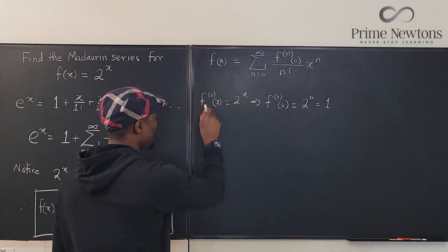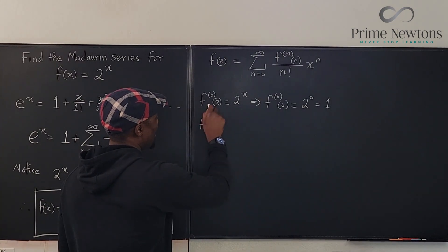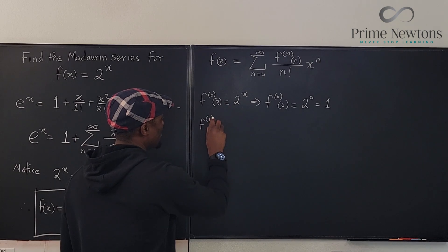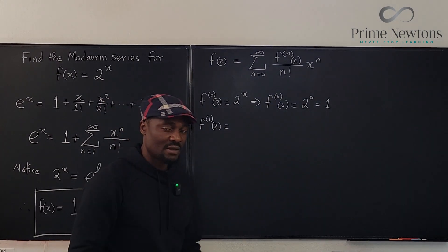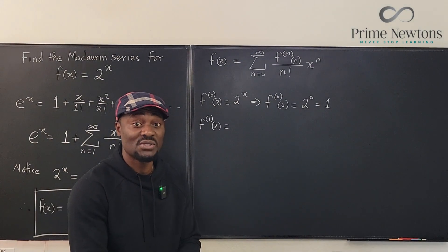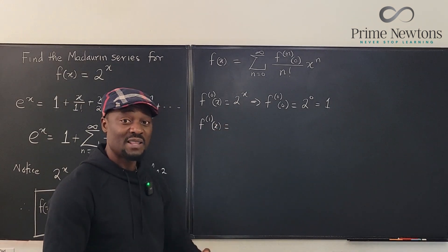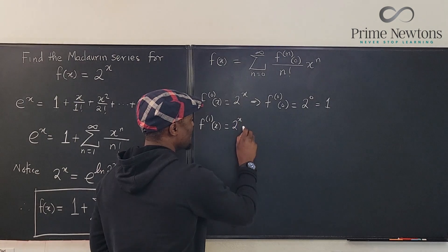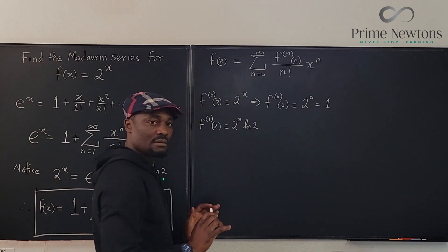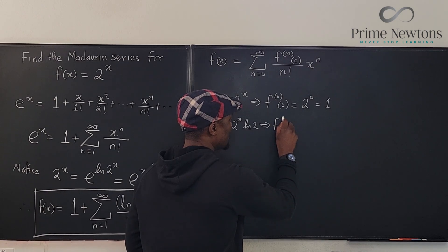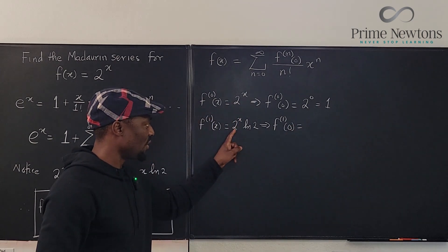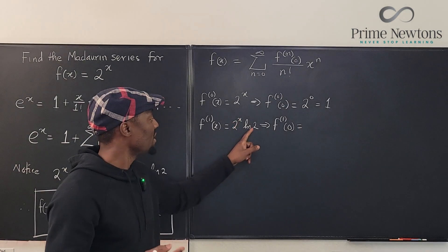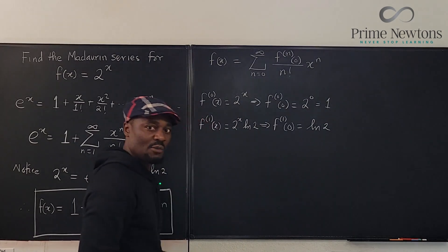Next, we're going to take the first derivative of 2 to the x. As a calculus student, you have to know the derivative of exponential functions — it is the function itself multiplied by the natural log of the base. So this is going to be 2 to the x times ln of two. The first derivative evaluated at zero: 2 to the zero is one, and one times ln two is ln two.